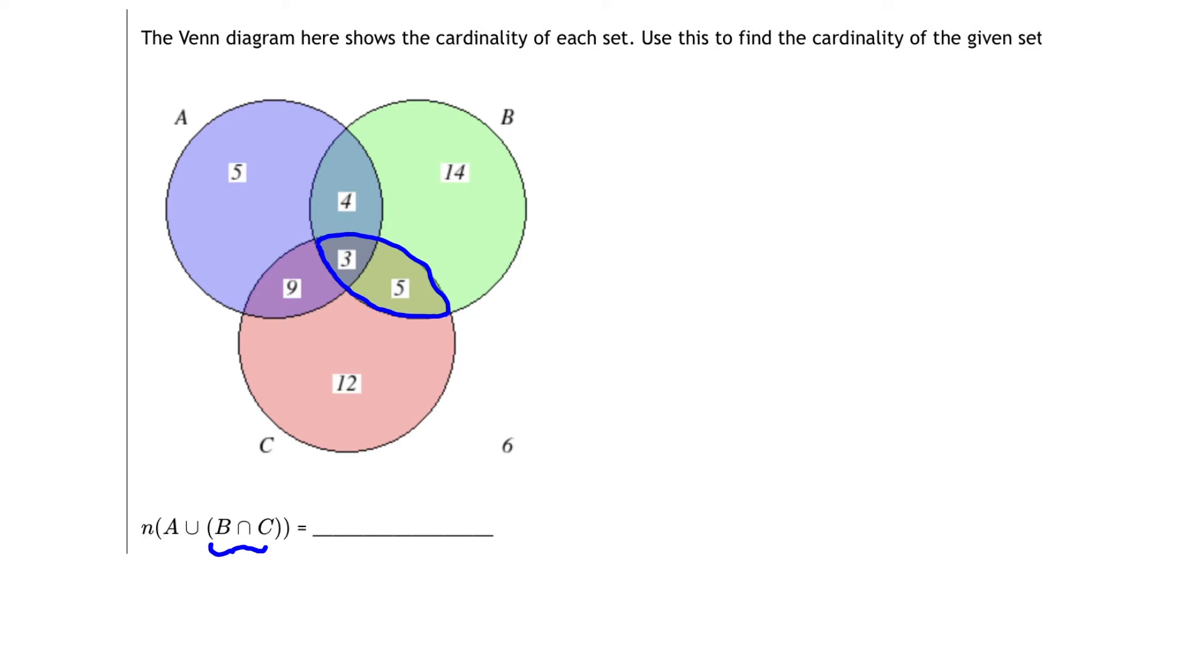Now what we need to do is take the union of A with this set. So we're going to take the blue set and union with it all of the elements in A. And where are those elements? Those elements in A are right here. So these are all the elements in A.